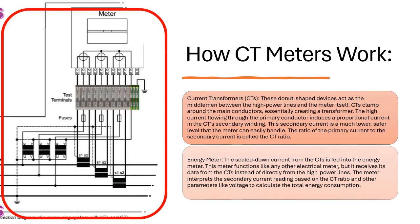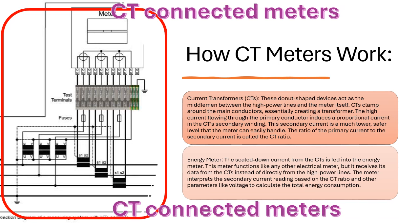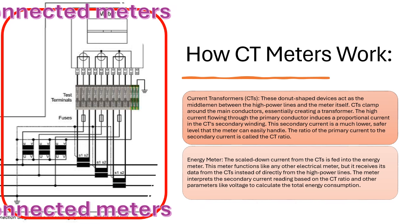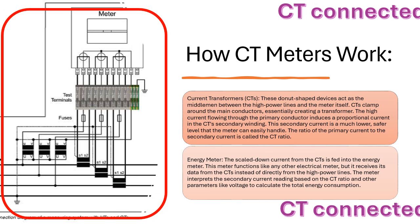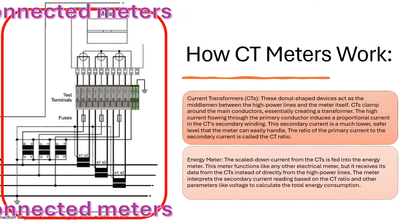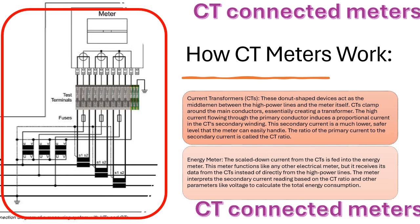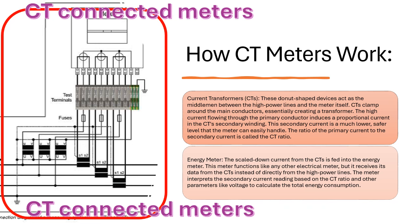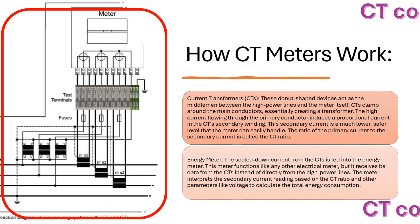Energy Meter: The scaled down current from the CTs is fed into the energy meter. This meter functions like any other electrical meter, but it receives its data from the CTs instead of directly from the high power lines. The meter interprets the secondary current reading based on the CT ratio and other parameters like voltage to calculate the total energy consumption.